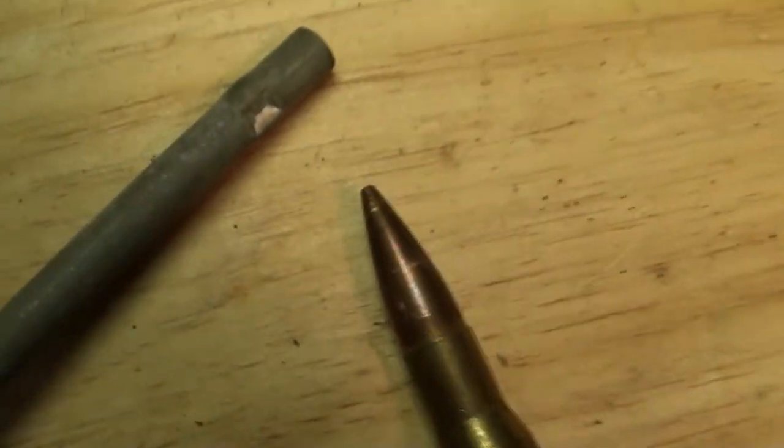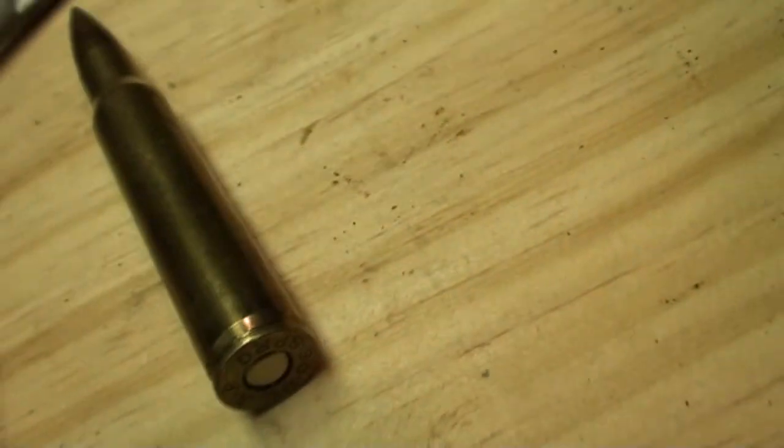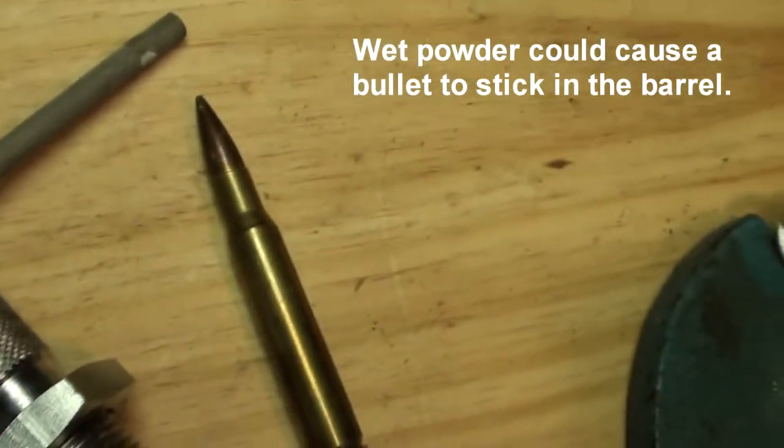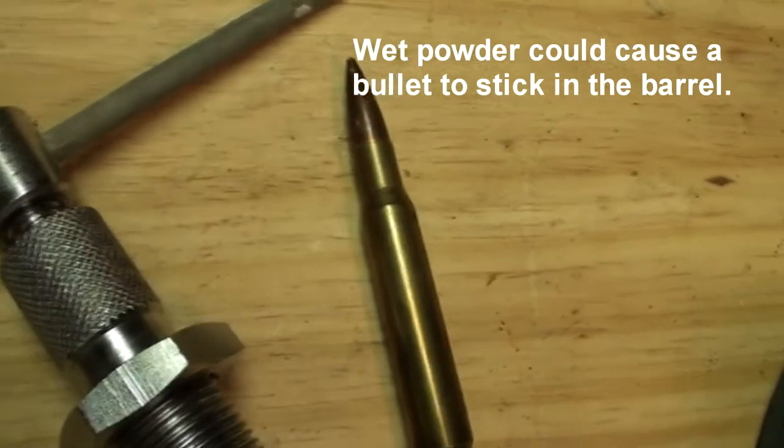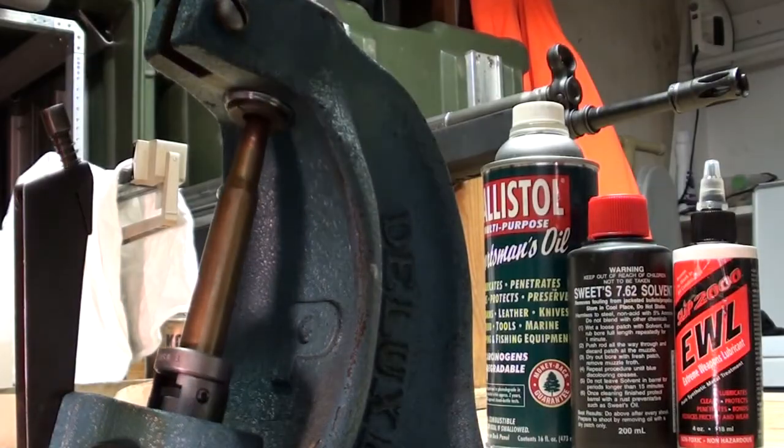When I was at the range scrounging for brass, I found this live .30-06 shell and I don't really want to fire it because it could have bad powder, so I'm going to pull that bullet. We'll just see how much powder is in this thing.